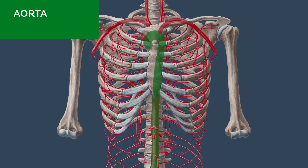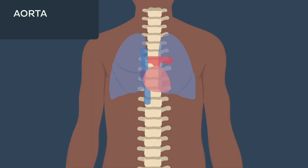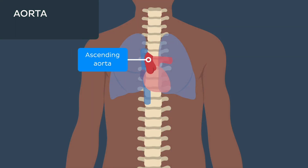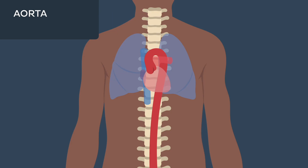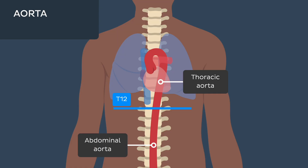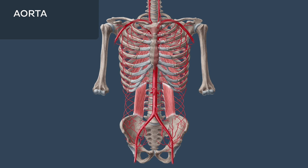The aorta is the largest artery in the body and through its numerous branches provides the arterial supply to the abdominal wall. It originates directly from the heart and consists of three parts: the ascending aorta, the arch of the aorta, and the descending aorta. Part of the descending portion is located in the thorax and is named the thoracic aorta, and part is located in the abdomen and is thus named the abdominal aorta. The abdominal aorta gives off a number of branches that provide arterial supply to both the anterior and posterior abdominal wall.